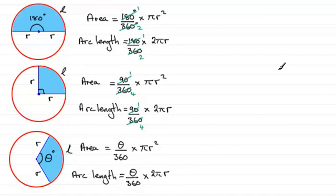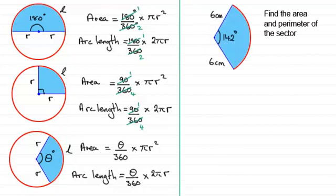Now, what I've got here is an example which you might like to try. It's to find the area and the perimeter, and I do stress the perimeter here of this particular sector.